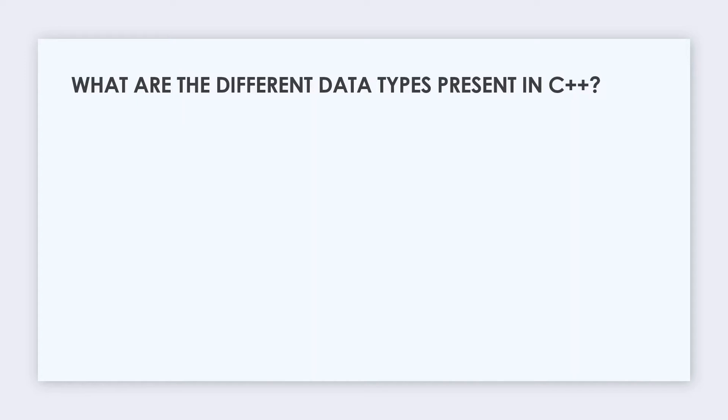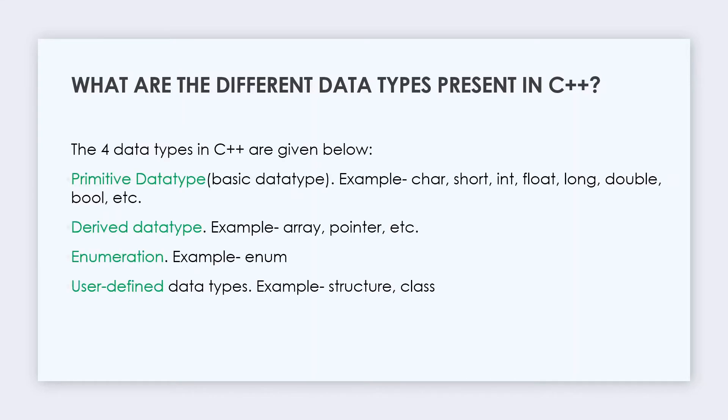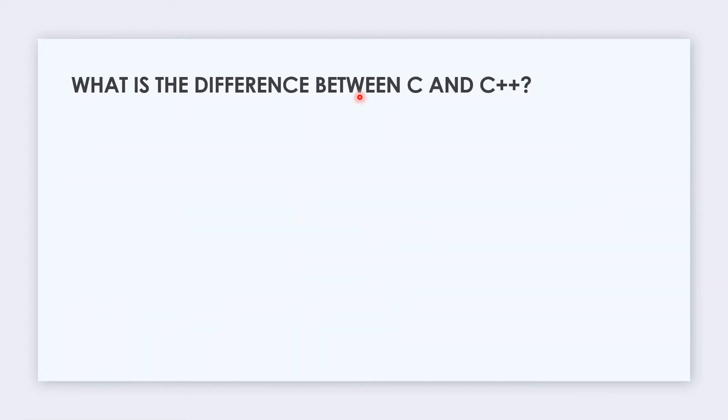The first question is: What are the different data types present in C++? The data types in C++ are categorized into four: primitive, derived, enumeration, and user-defined. Primitive data types include char, short, int, float, long, or double. Derived data types include array or pointer. Enumeration includes enum, and user-defined includes structure or class.